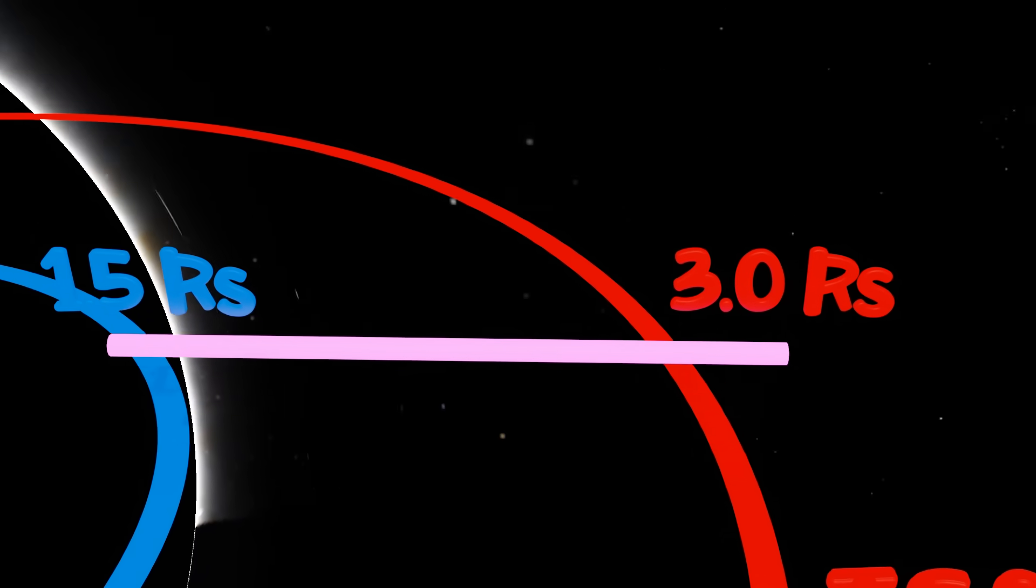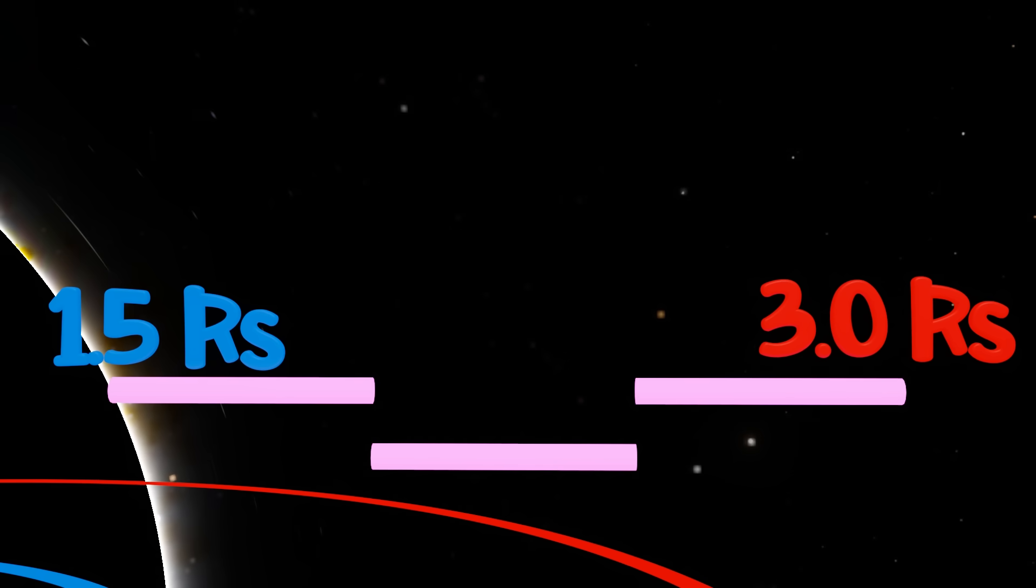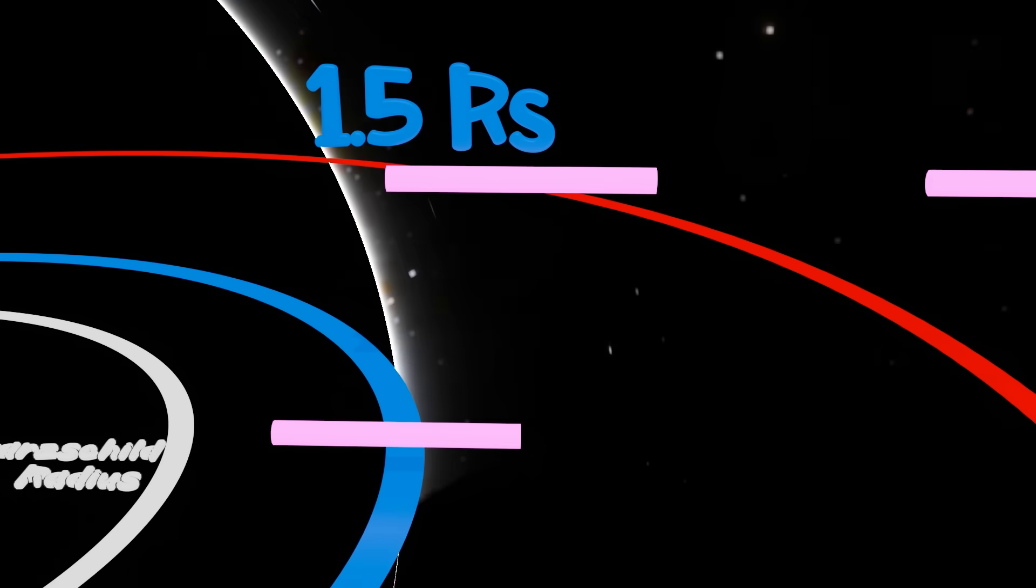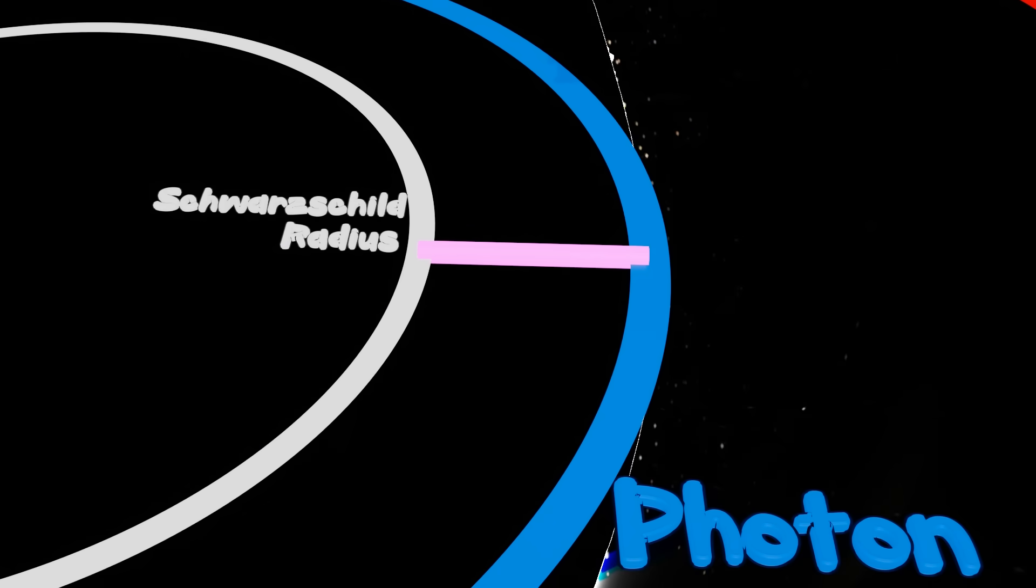Down here, everything is as black as black can be. There's two things we can do to counter this. The first is just simply watching our ever-shrinking window above us. When that shrinks to a point, we are directly above the event horizon. Or we can measure the distance between the ISCO and the photon sphere and divide that by three. Once we've traveled that distance beyond the photon sphere, we've crossed the event horizon.